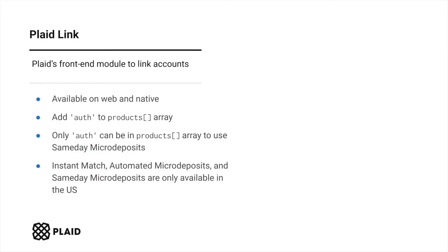Each authentication flow requires you to integrate PlaidLink, Plaid's front-end module, which is available on web and mobile. To use Plaid's auth product, add auth to the products array when creating the link token via the link token create endpoint. Note that to use same-day micro-deposits, only auth can be within the products array. Also note that instant match, automated micro-deposits, and same-day micro-deposits are currently only available in the US, so only add that country code to the country codes array when creating the link token.